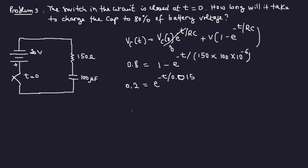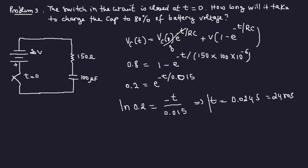To find t, we take the natural log of both sides: ln(0.2) equals minus t over 0.015. So t equals minus 0.015 times ln(0.2). Using a calculator: t is approximately 0.024 seconds, or about 24 milliseconds.